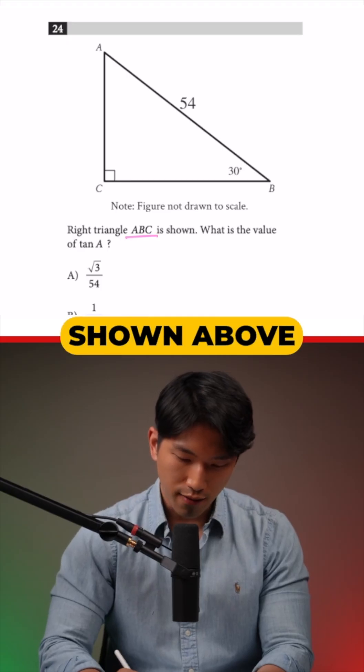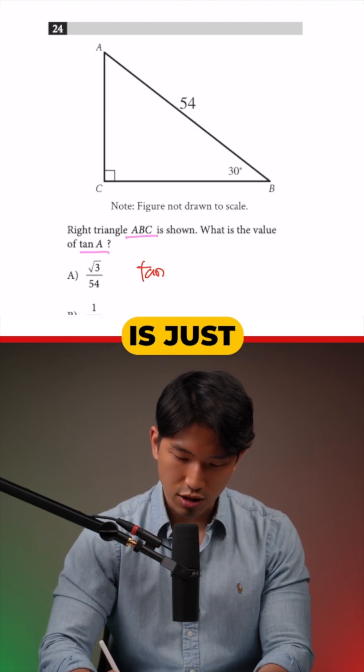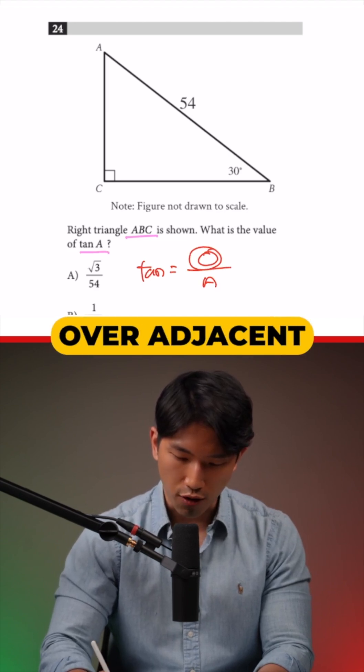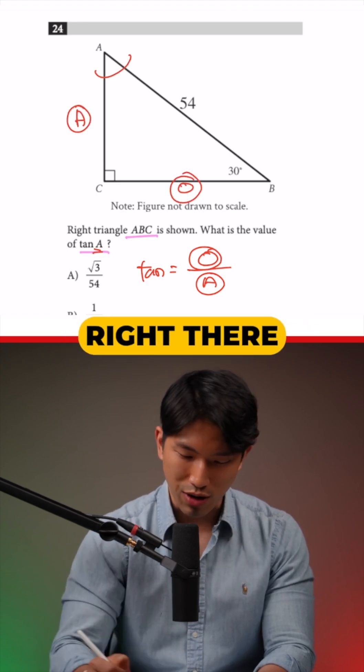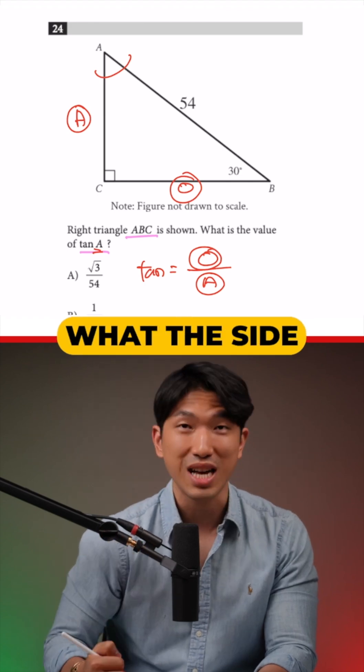Right triangle ABC is shown above. What's the value of tangent of A? And we know tangent is just simply going to be opposite over adjacent. And we know our A value is going to be right there. Opposite is going to be right there. Adjacent is going to be right there. The only problem is we don't know what the side lengths are.